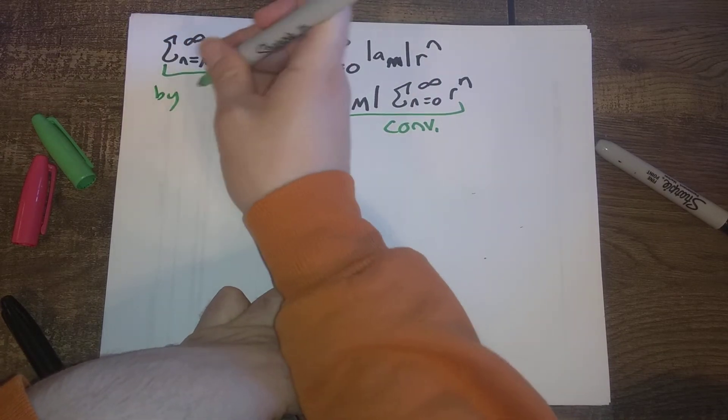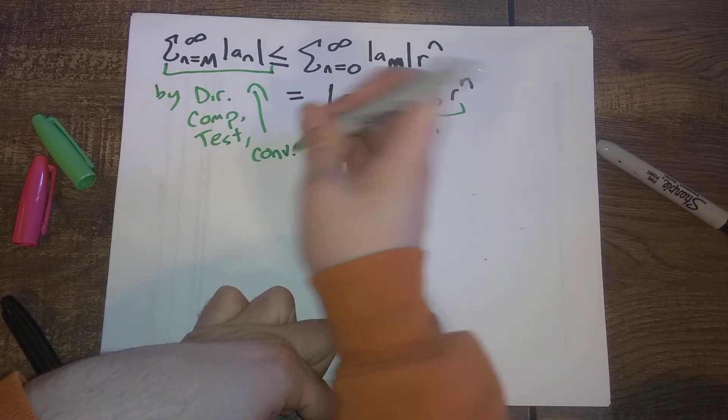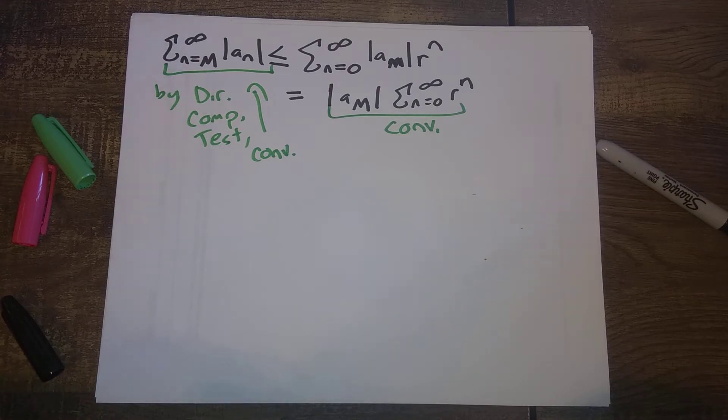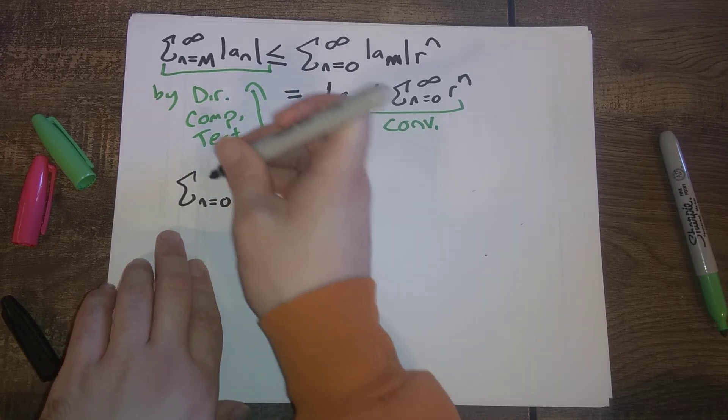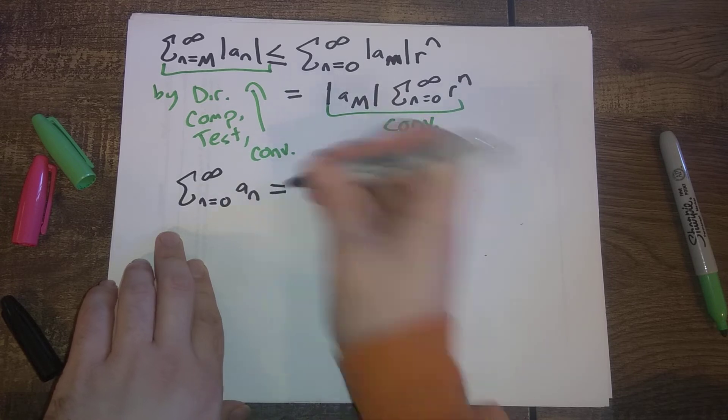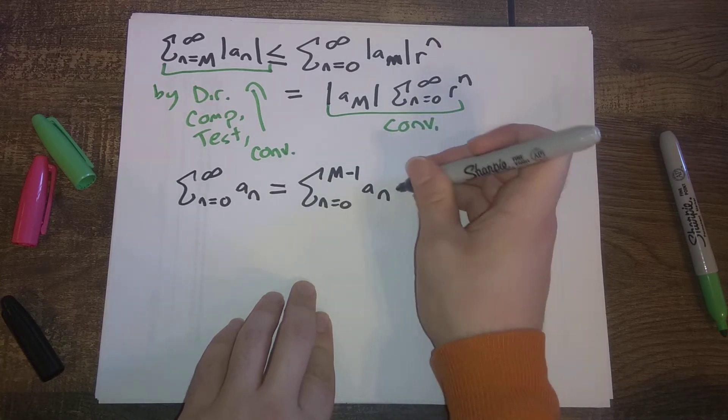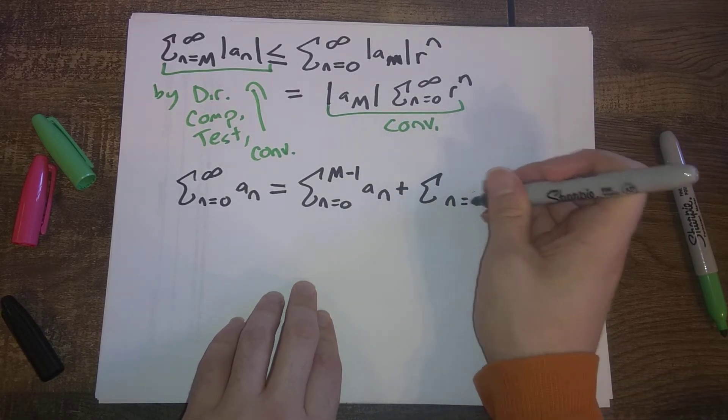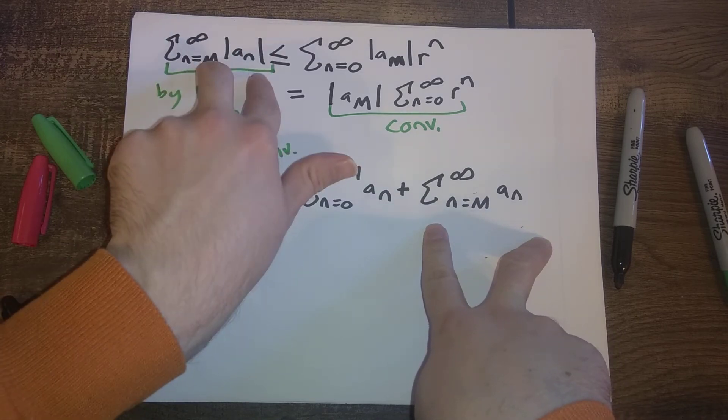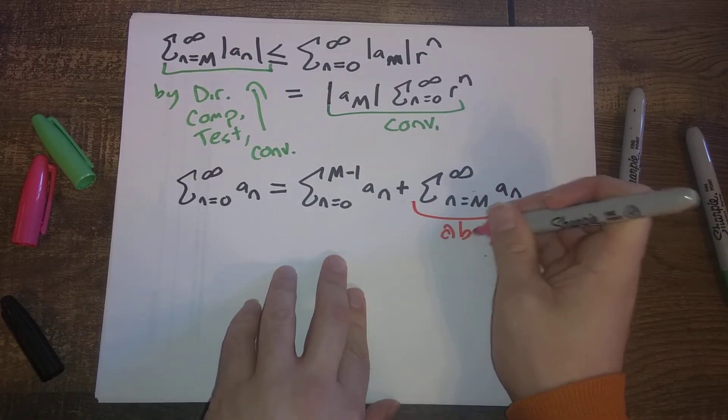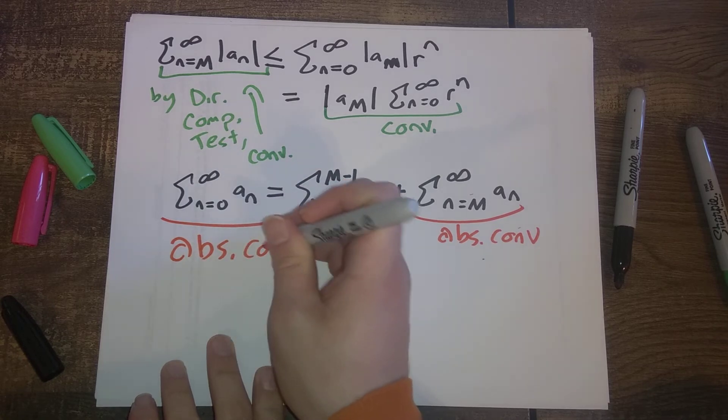And so by the direct comparison test, this converges. So our original series, our series here is going to be the sum from n from 0 to infinity of a_n, which is equal to the sum from n from 0 to big M minus 1 of a_n, plus the sum from n from big M to infinity of a_n. So because this here converges in terms of absolute value, this absolutely converges, and this is just a finite thing. So this whole sum is also going to absolutely converge.